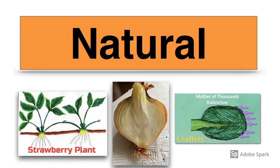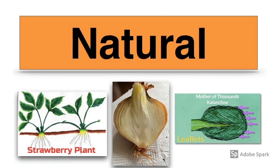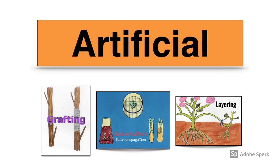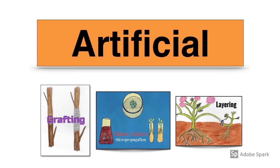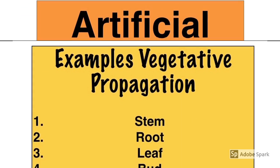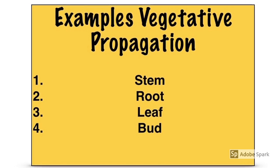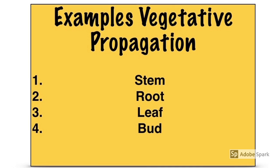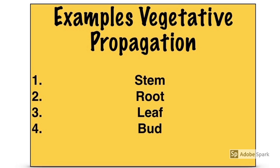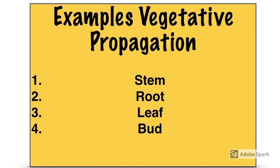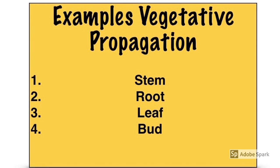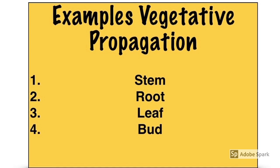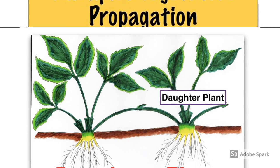Vegetative propagation can happen naturally and there are also artificial methods. For natural vegetative propagation, you must give an example involving a stem, root, leaf, and bud.